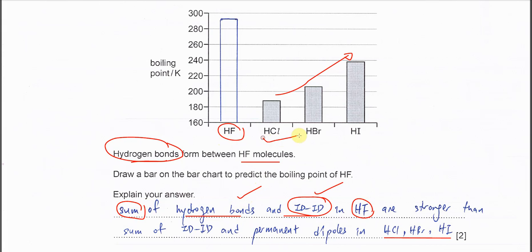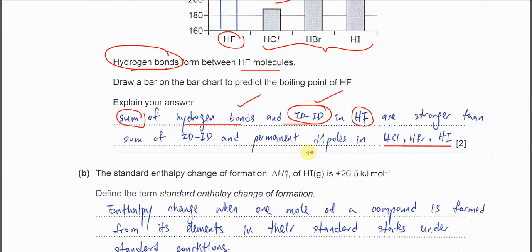It's actually the sum of the Van der Waals forces. In HF, it has IDID together with hydrogen bonds. In HCl, HBr, and HI, it has permanent dipoles. Of course, at the same time, it has IDID.